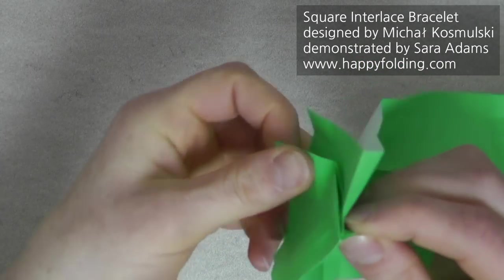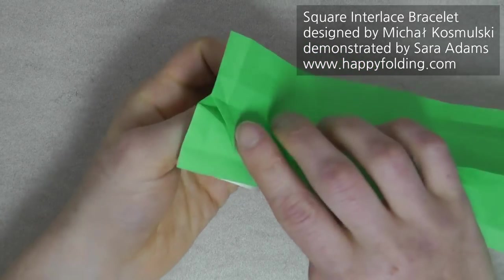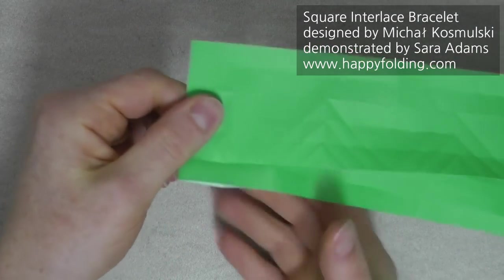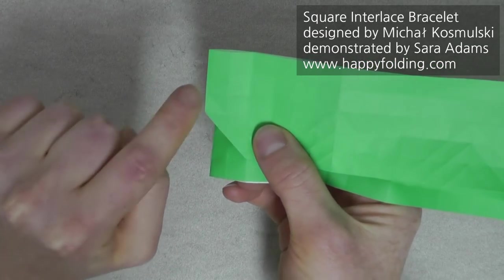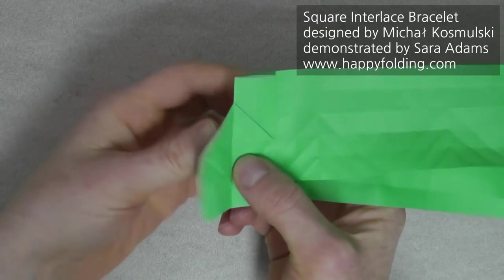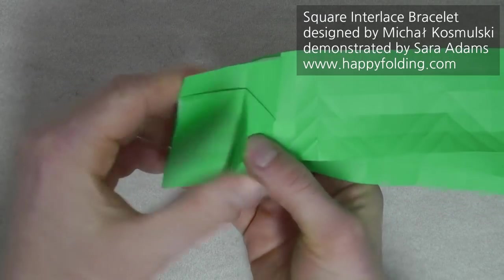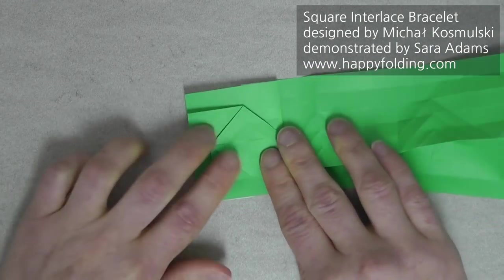And then we're going to make this flap fold up, and this long strip fold down. And then we're going to open this right here along a crease line that has two columns here next to it. And on the other side, it automatically opens, and we have a nice square twist done.